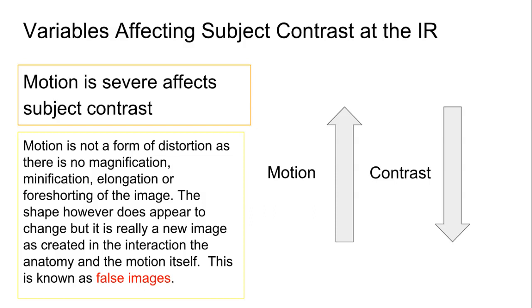And motion doesn't fit technically into any of those categories. What it does do is create many, many blurred overlapping images that are known as false images. And due to this, your contrast certainly will go down. Spatial resolution would go down too, although we're not addressing that in this slide.